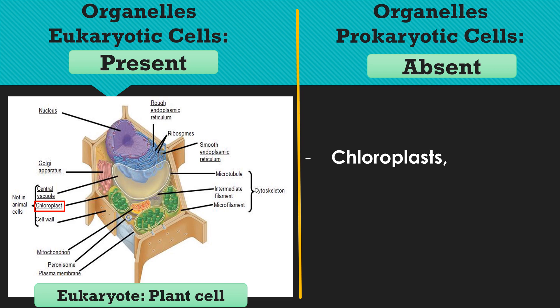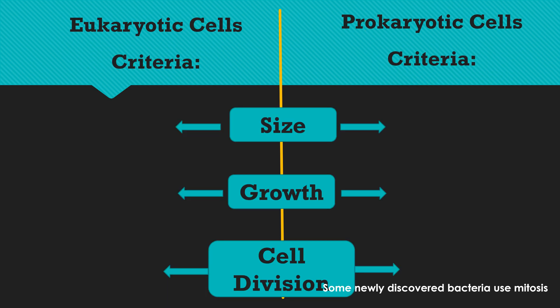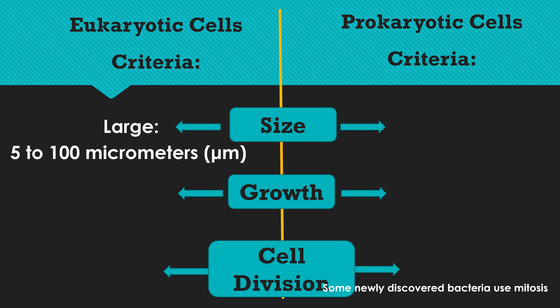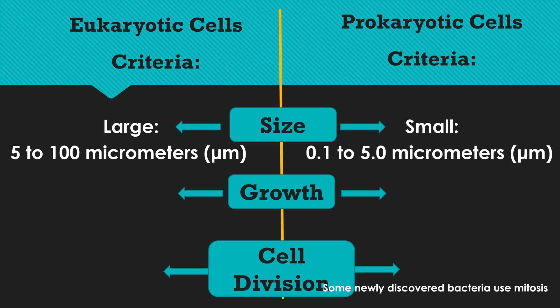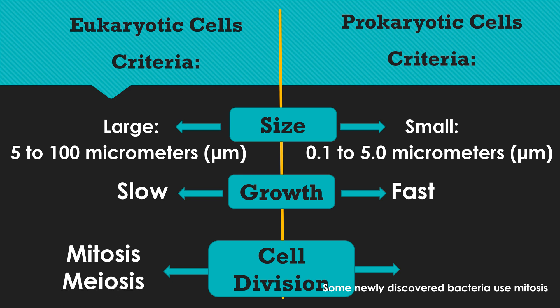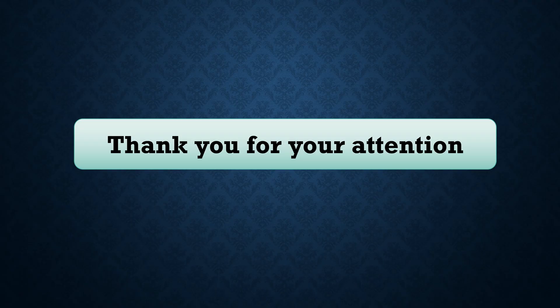Other differences between eukaryotic and prokaryotic cells involve size, growth, and cell division. Eukaryotic cells are larger than prokaryotic cells, which are smaller. Eukaryotic cells have slow growth while prokaryotic cells grow fast. For cell division, eukaryotic cells use mitosis and meiosis, while prokaryotic cells use binary fission.